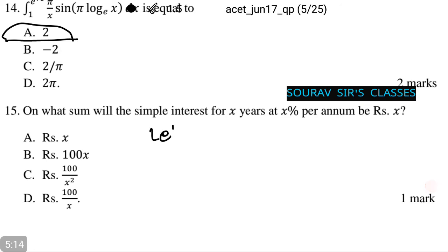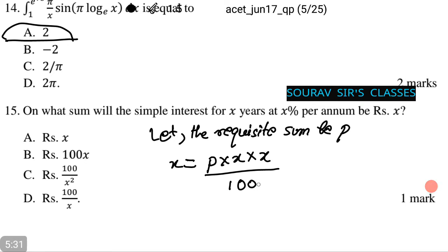We can do this by letting the requisite sum be p. Hence, x equals p into x into x, or p times x squared divided by 100. Or p equals 100 by x.